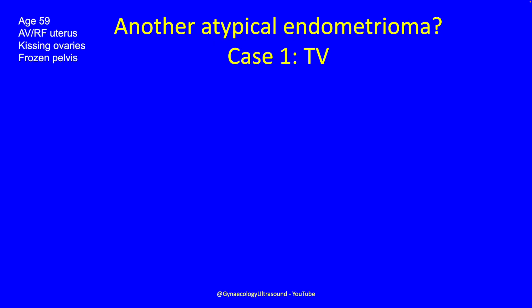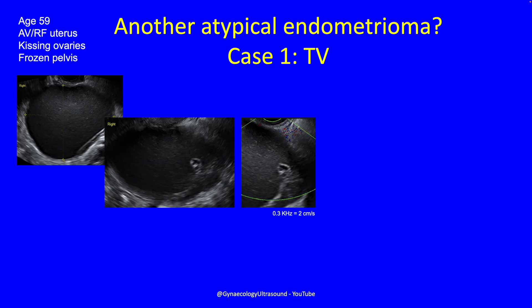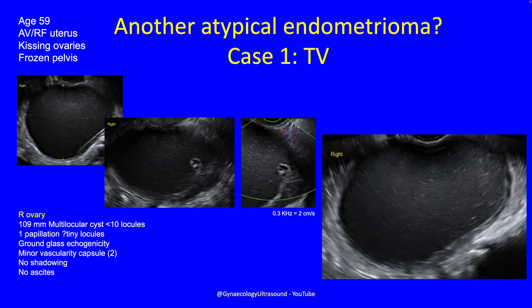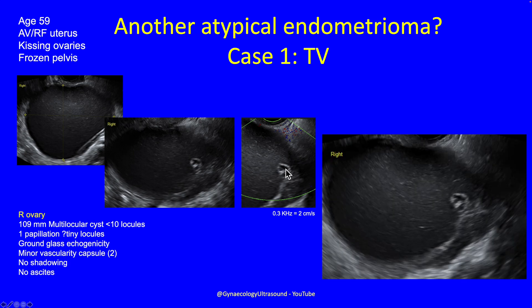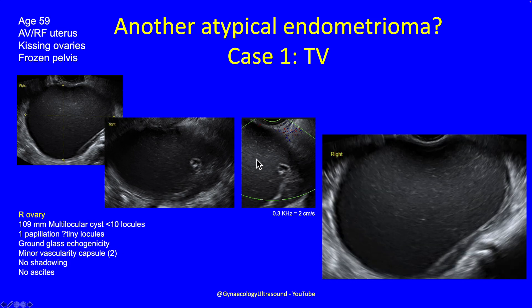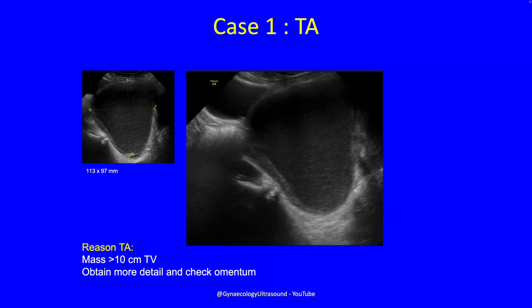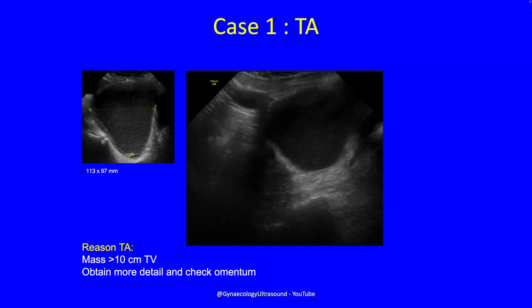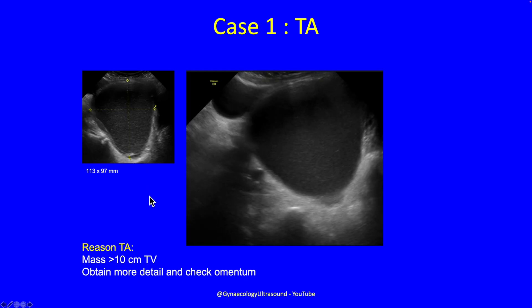Would this be another one? This patient was 59, presenting with an anteverted retroflex uterus, kissing ovaries, and a frozen pelvis. Her cyst was 109 millimetres and multilocular — it's not clear whether these are a few small locules together or a papillation. There's ground-glass echogenicity, minor vascularity in the capsule, no shadowing, and no ascites. We went transabdominal to get better views of the cyst, since it was more than 10 centimetres, and to check the omentum.